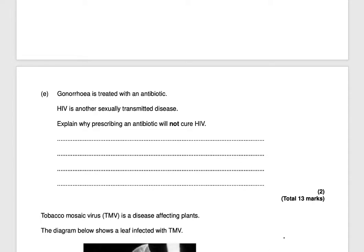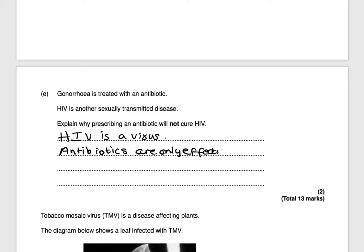Next question: gonorrhea is treated with an antibiotic but HIV is another sexually transmitted disease. Explain why prescribing an antibiotic will not cure HIV. The reason is that HIV is a virus, and antibiotics are only effective against bacteria — they will not kill viruses because viruses live inside cells. That would get you two marks.